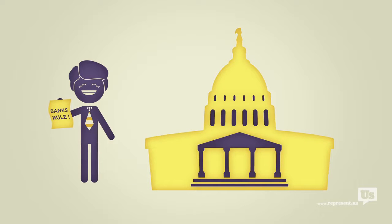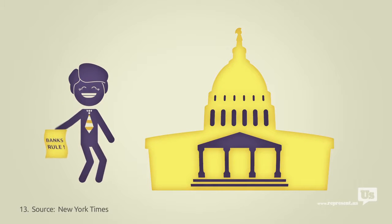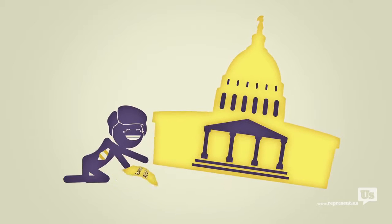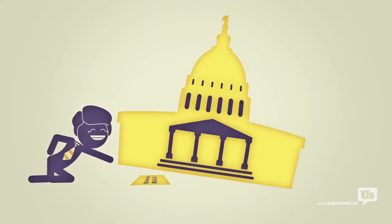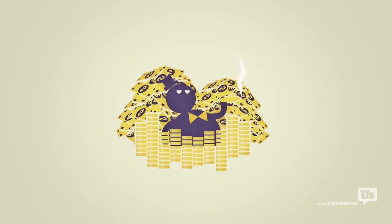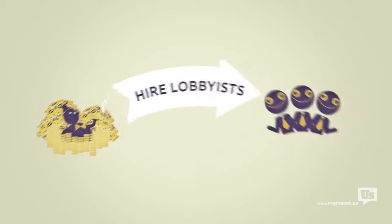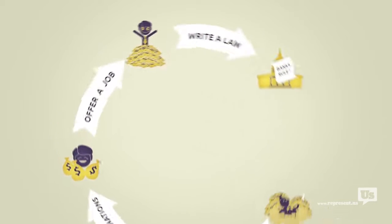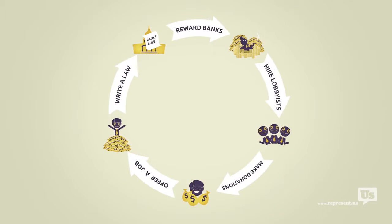And it's perfectly legal for those politicians to take the lobbyist-written language and sneak it through Congress at the last second. So now you've got a law that greatly benefits the banks and the whole process can start over. This is how a bill becomes a law. A special interest hires some lobbyists. Those lobbyists collect campaign contributions, offer jobs, and then write the laws that Congress then passes to help those same special interests.